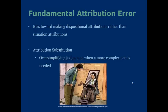The fundamental attribution error is a bias towards making dispositional attributions rather than situational ones. If you see a homeless person, you might think they were just lazy or made some very poor life decisions. The truth might be that their circumstance led them to that situation more so than their personal characteristics. Attribution substitution is an oversimplifying judgment when a more complex one is needed. Going back to evaluating a homeless person, you might just brush them off as a druggie, but the truth is they may have fallen into a very poor circumstance, and you are oversimplifying your judgment.